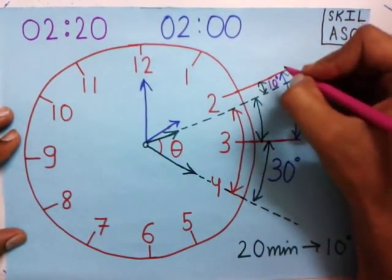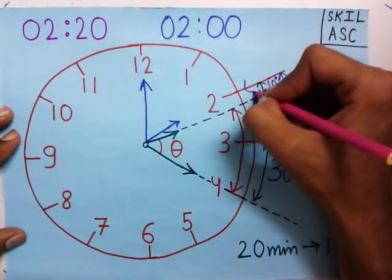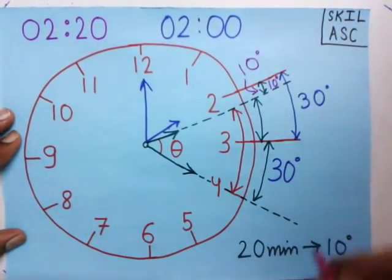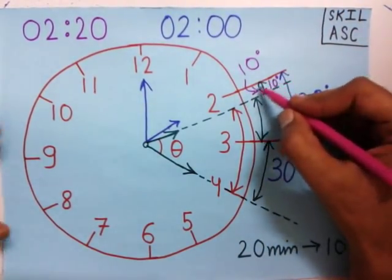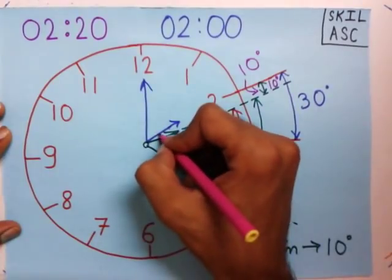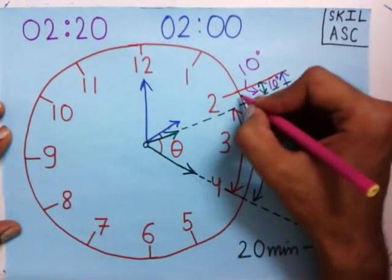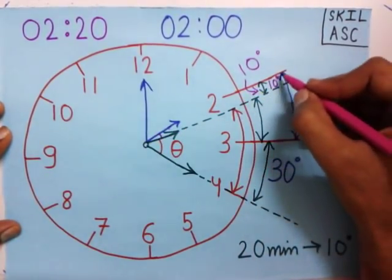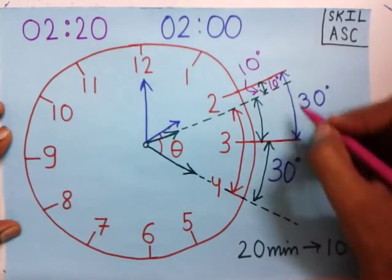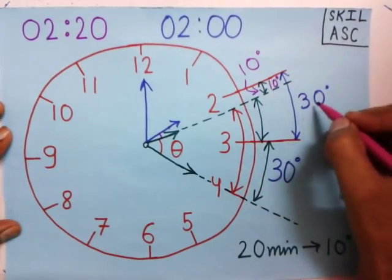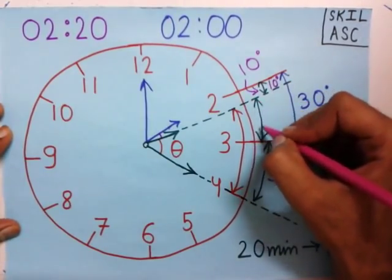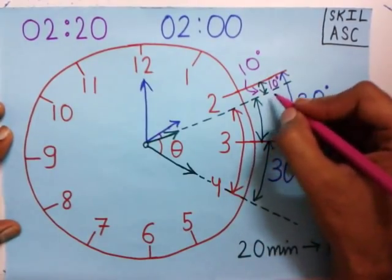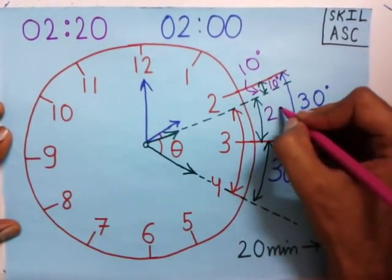So this angle is 10 degrees. We have a total of 30 degrees for the gap between 2 and 3. We subtract 10 from 30 and get 20 degrees for this sub-angle.